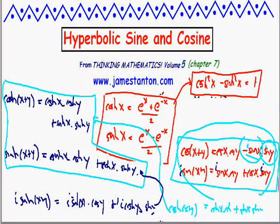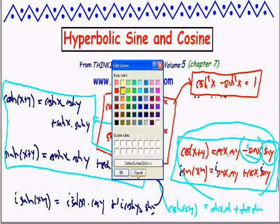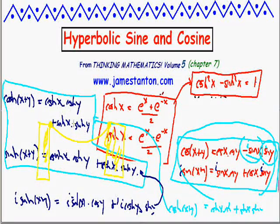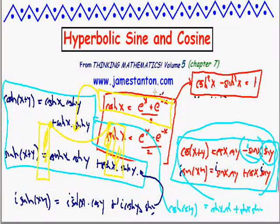Alright, lots of fun — hope this helps explain where cosh and sinh come from. Oh, and by the way — Galileo wondered whether a hanging chain or rope between two poles makes a parabola. It turns out it's not a parabola; it's basically a cosh curve. So hyperbolic sine and cosine actually appear in all sorts of places in nature. Thanks so much everyone!